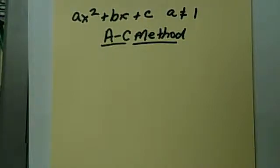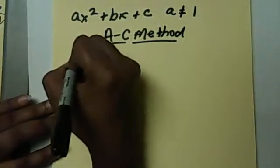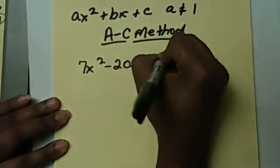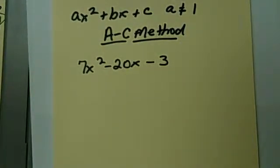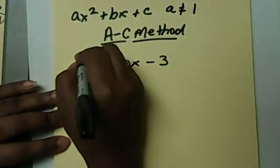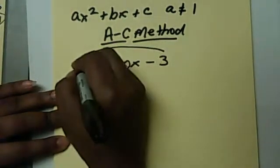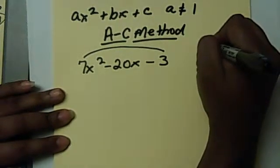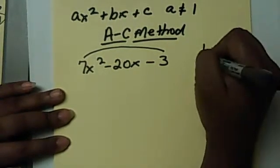So we're going to factor this trinomial using the AC method. On the last video, my example was 7x squared minus 20x minus 3. The AC method starts off similar to the bottoms up method. You still have to do A times C. So you still have to multiply these and list the factors. So our factors was 1 and 21 and 3 and 7.